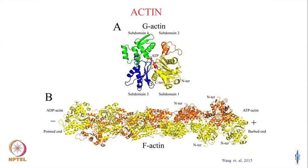Here is actin. This over here is what is called G-actin, or globular actin — the globular monomeric form of actin. This is a single monomer of this G-actin protein. It is a protein consisting of four subdomains 1, 2, 3, and 4. And if you see over here in the middle, there is an ATP molecule sitting there.